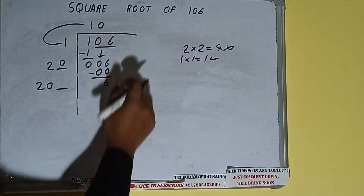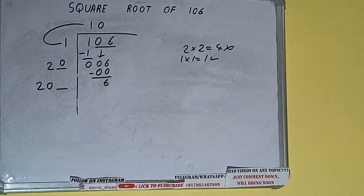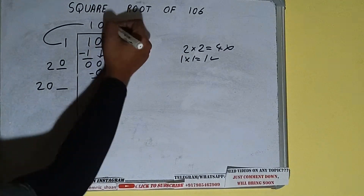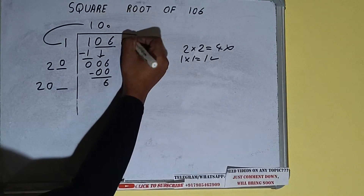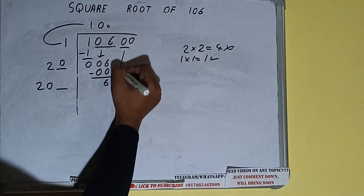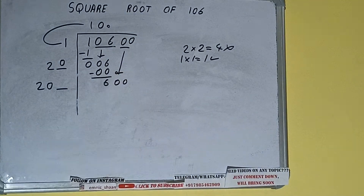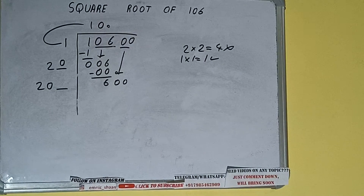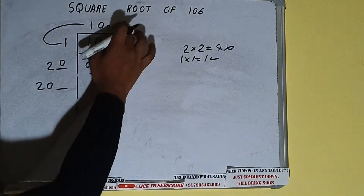This number needs to be made bigger but we don't have more pairs, so we'll put a decimal. Once we put the decimal, we can bring a pair of zeros down and the number will be 600.